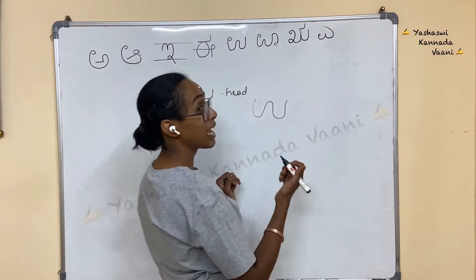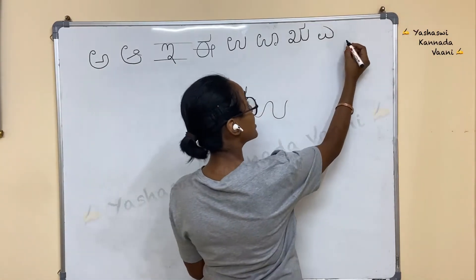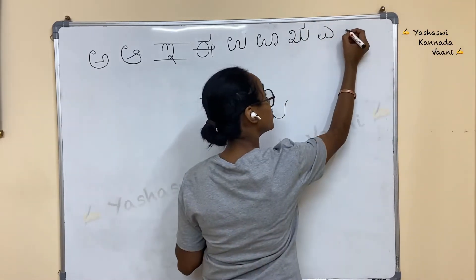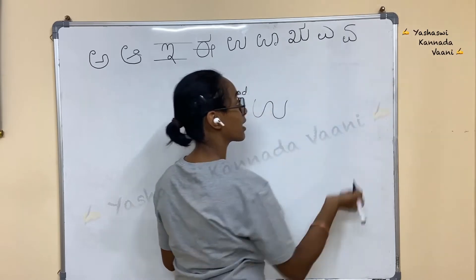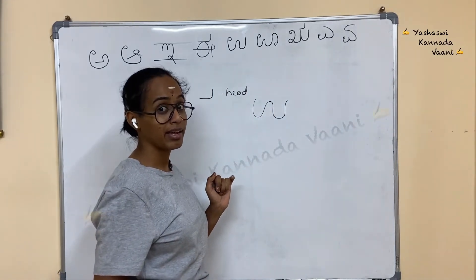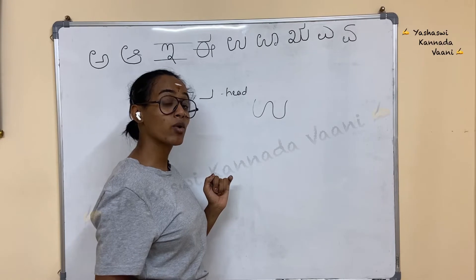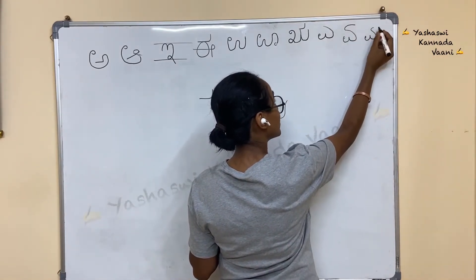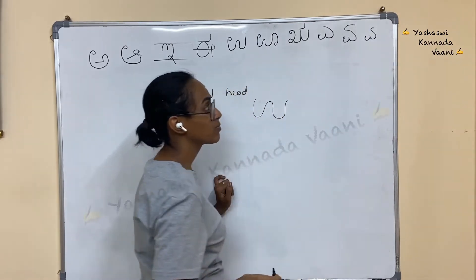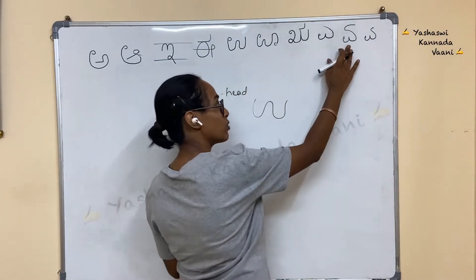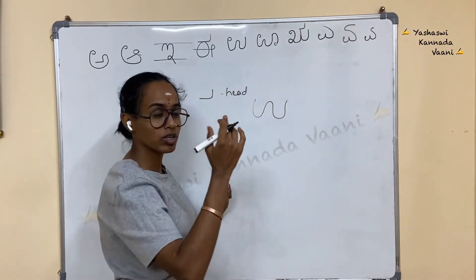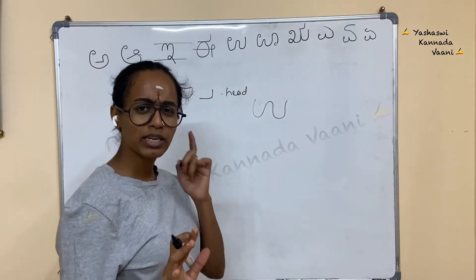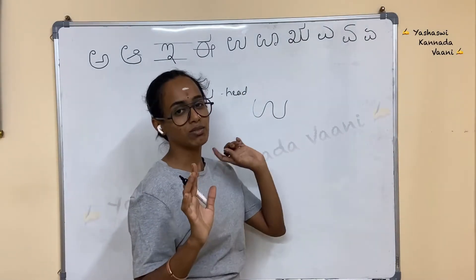Very good. Next, A (ಏ). Write as it is, then go back. From here, go back and turn back. This is your A (ಏ). Arial — Aeroplane. In the textbook, this will be given in a slightly different form. Don't get confused — this is the written version and that is the printed version.